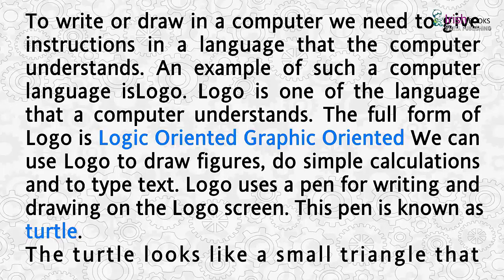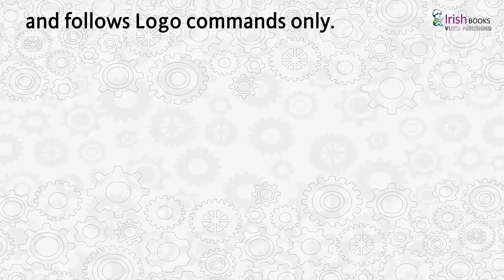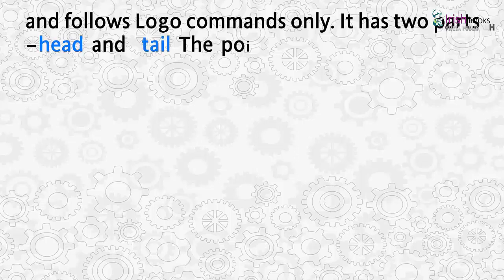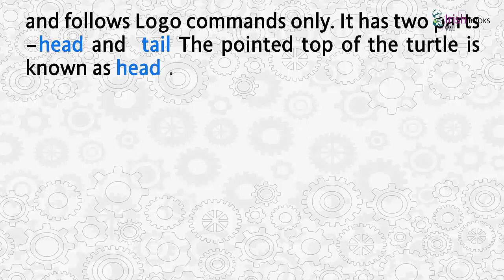The turtle looks like a small triangle that understands and follows Logo commands only. It has two parts: head and tail. The pointed top of the turtle is known as the head, and the bottom part of it is known as the tail.